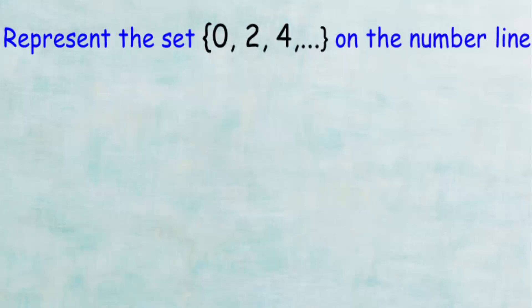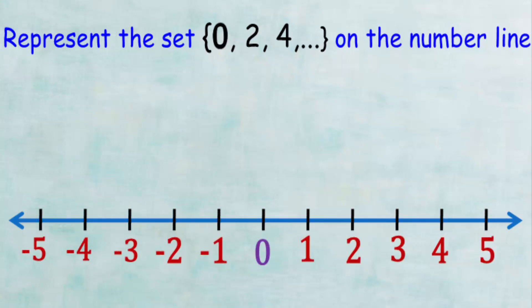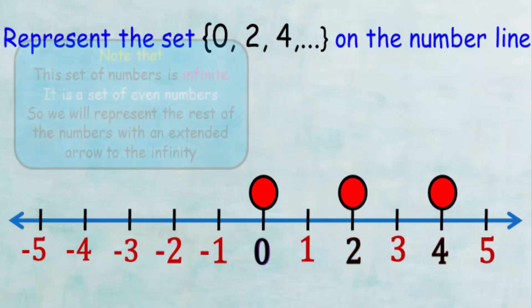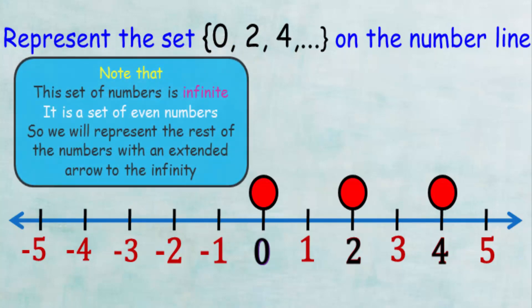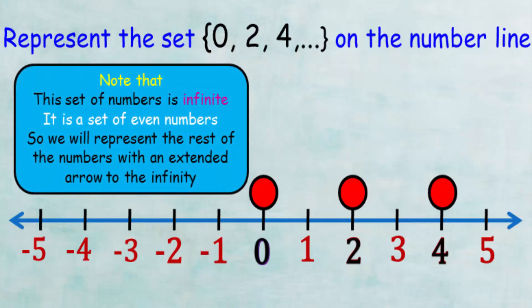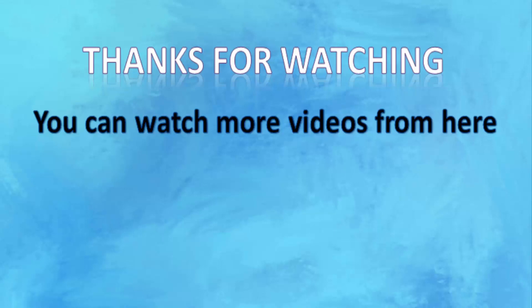We will do as we did before by putting a circle around the numbers 0, 2, and 4. But this set of numbers is infinite. It is a set of even numbers, so we will represent the rest of the numbers with an extended arrow to the infinity. I hope it will be a simple method.